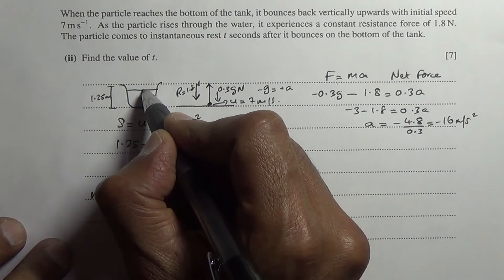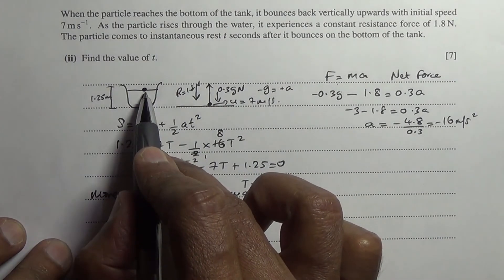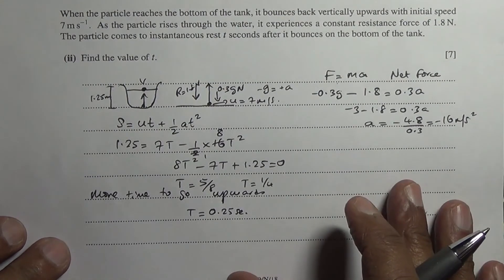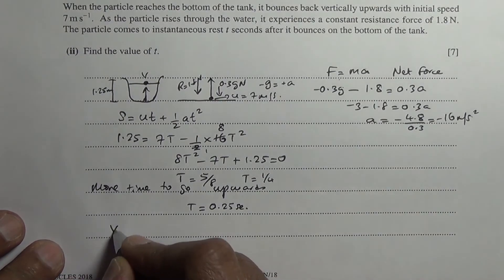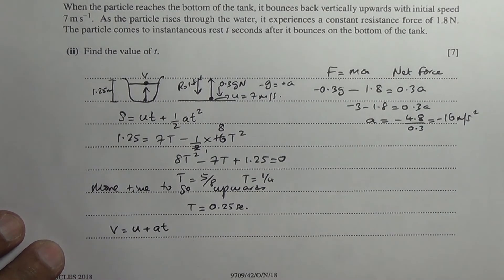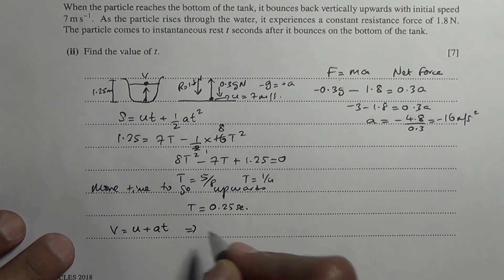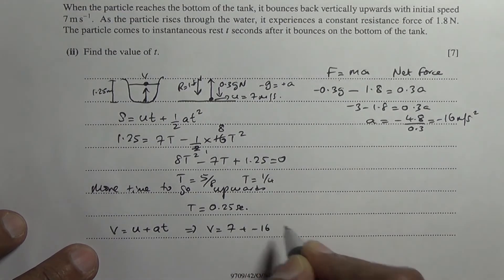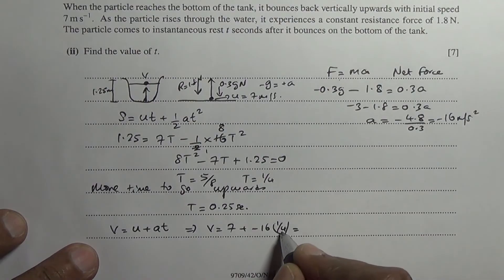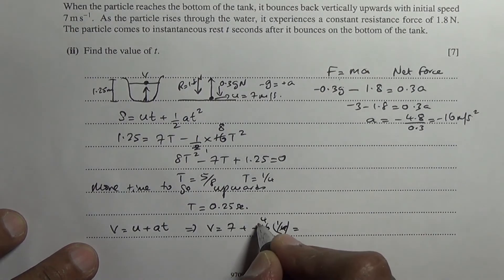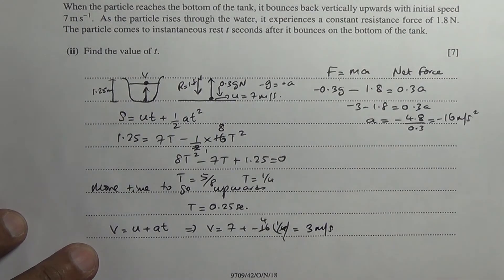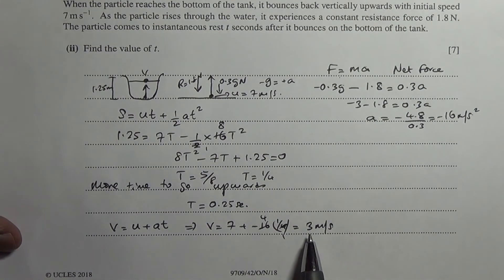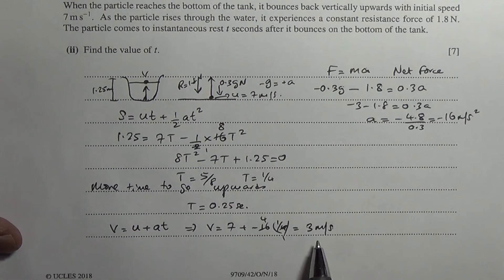When the object reaches the water surface going up, we find the speed using v = u + at. So v = 7 + (−16)(0.25) = 7 − 4 = 3 meters per second. The speed at the surface of the water on the way up is 3 meters per second.